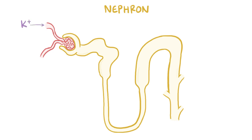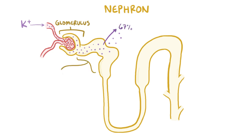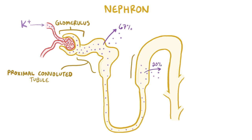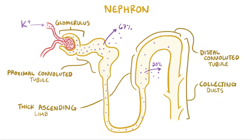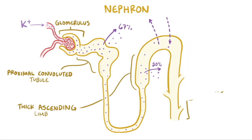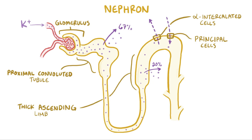Potassium is freely filtered from the blood into the urine at the glomerulus. After that, about 67% is reabsorbed in the proximal convoluted tubule, and an additional 20% is reabsorbed in the thick ascending limb, leaving about 13% of the initial amount. At this point, the distal tubule and collecting ducts can either reabsorb or secrete potassium depending on what the body needs. Reabsorption here is handled by the alpha intercalated cells, while secretion is controlled by the principal cells. Typically, more potassium is secreted than reabsorbed at this stage.